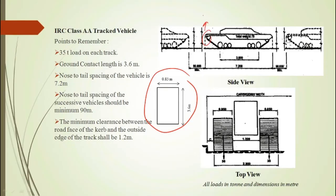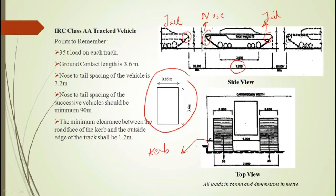The front of the vehicle is called the nose and the rear is called the tail. As per IRC, the distance between the nose and tail of the vehicle should be 7.2 meter. IRC also recommends that the distance between two successive vehicles should be a minimum of 90 meter to avoid congestion. The distance between the outermost face of the curb and the outermost part of the track is denoted by C, and as per IRC the value of C should be minimum 1.2 meter.